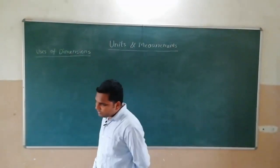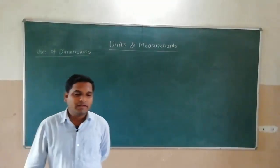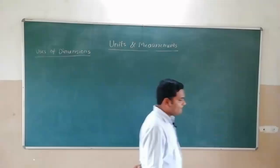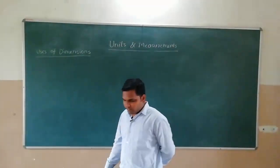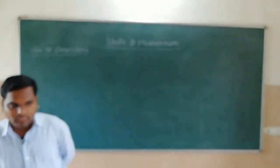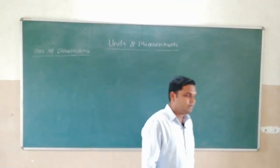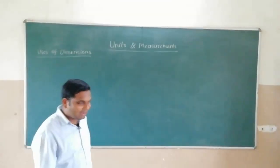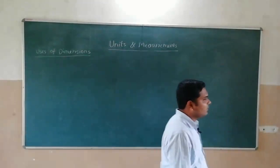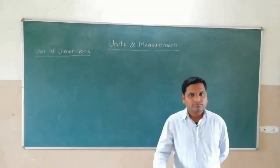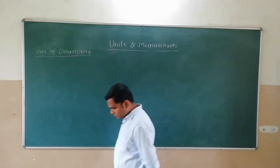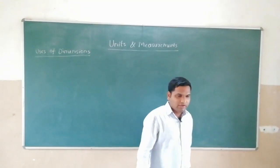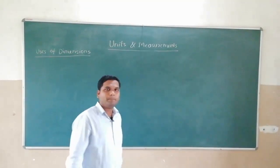Kinetic energy of a body depends on mass of the body and its velocity. Deduce the exact relation between them.